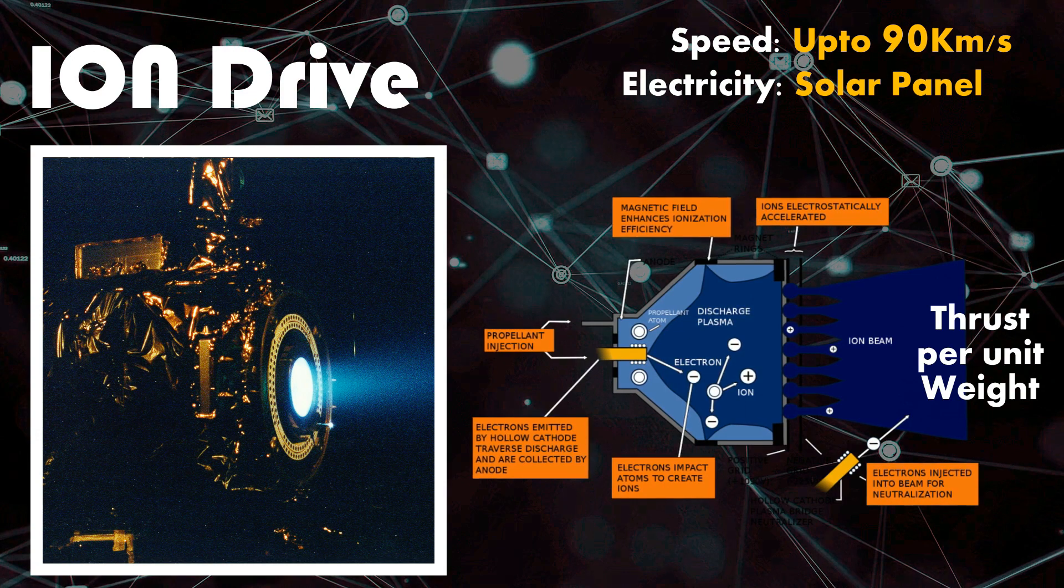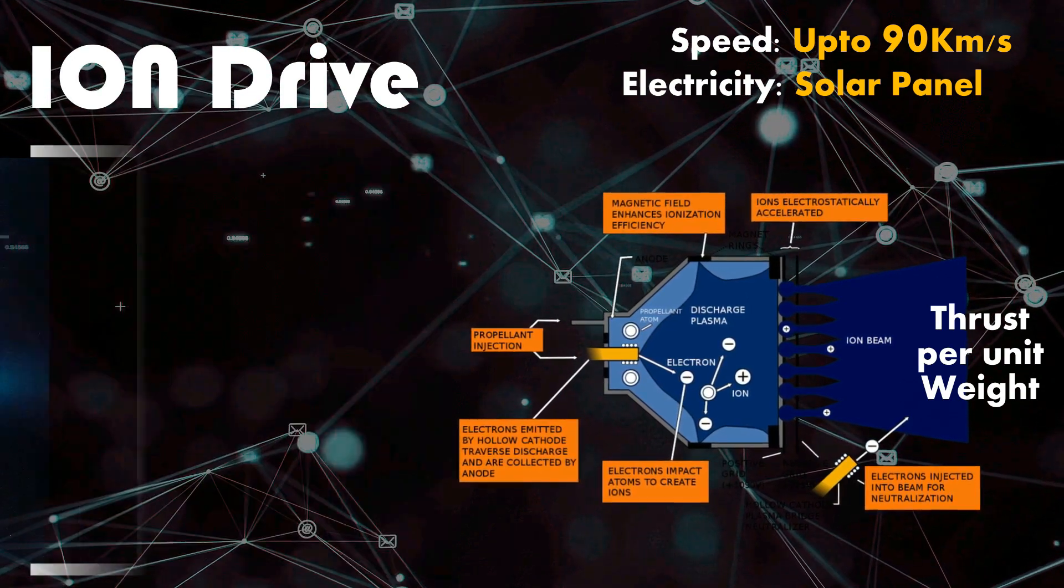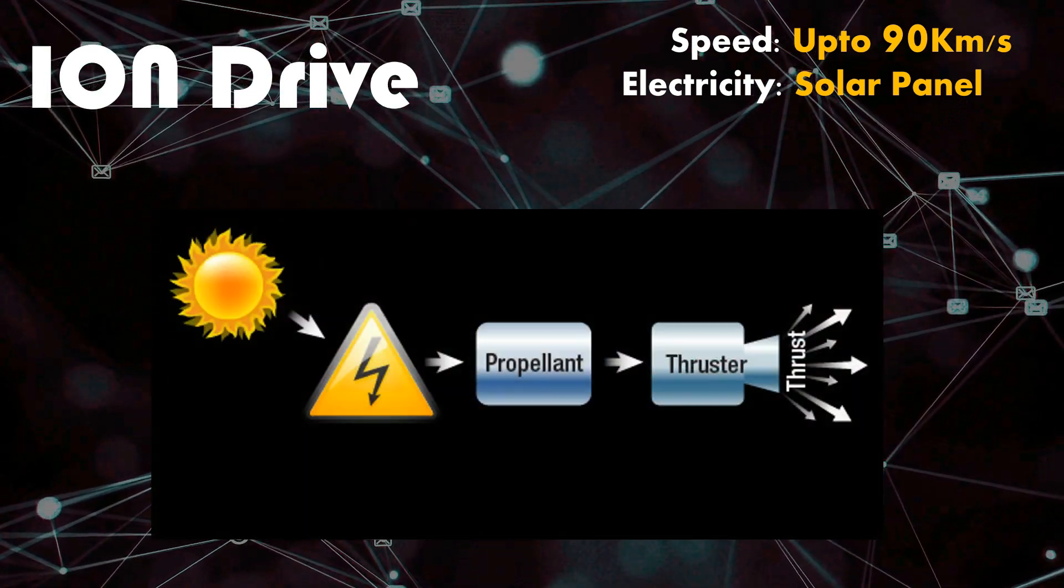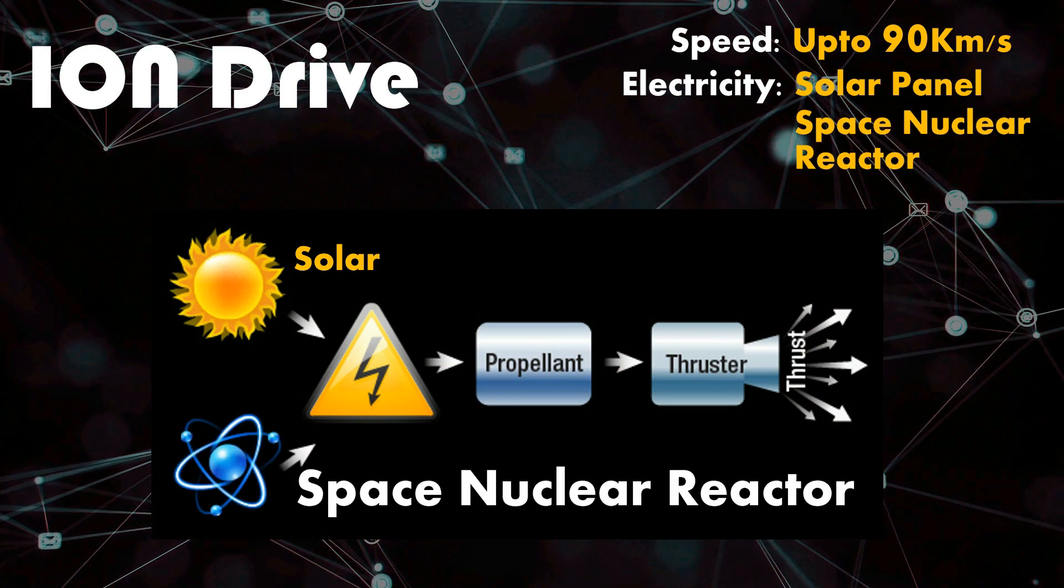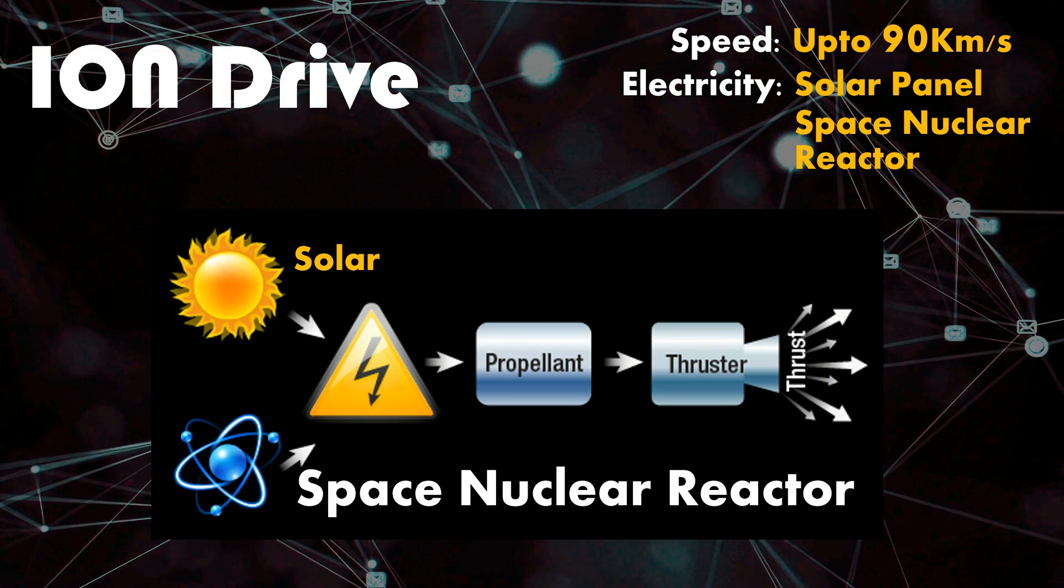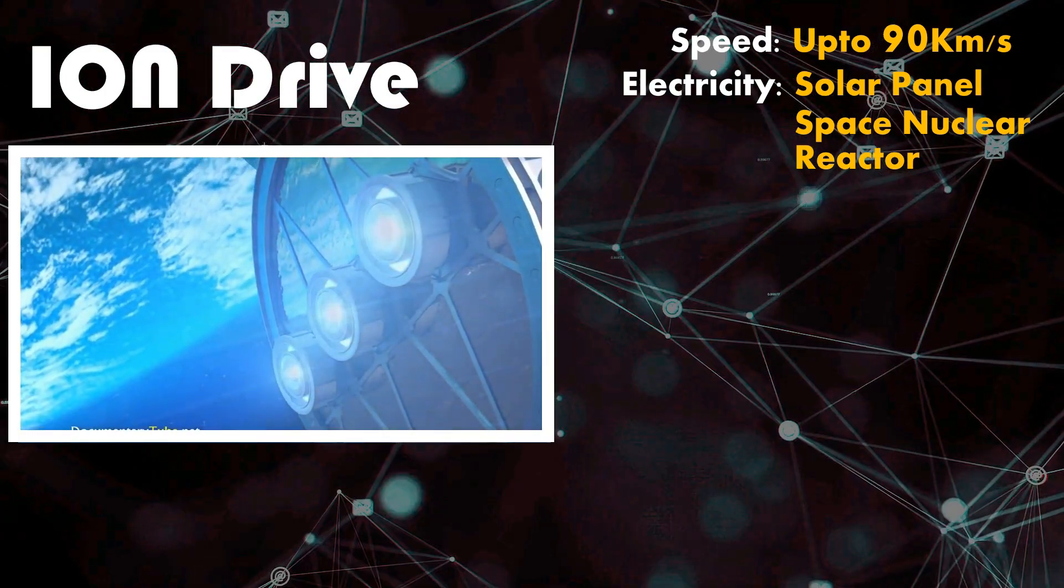If we make a spacecraft for interstellar travel with ion drive, the energy requirement for such ion drives cannot be met with solar panels alone. We need to generate power using space nuclear reactors, considering the electricity a typical nuclear power plant generates.